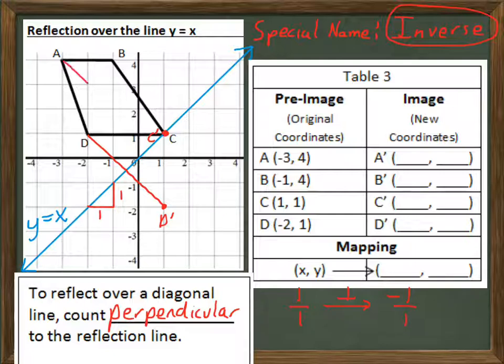Let's count it for A. Here's 1, 2, 3, and a half diagonal units. So, I need to count the same on the other side. Here's a half. 1, 2, 3. There's my coordinate for A prime.